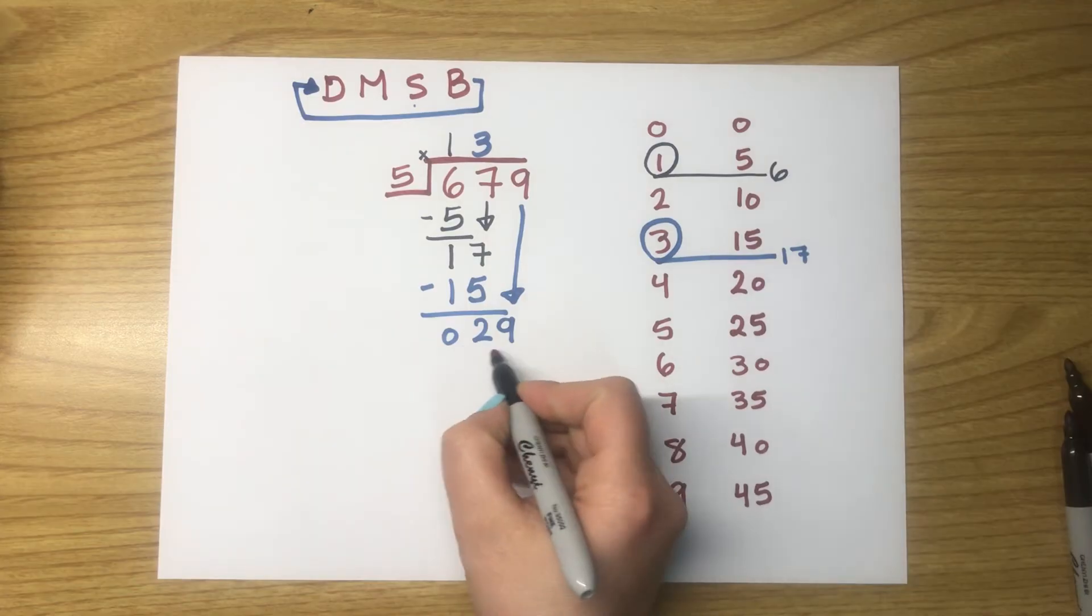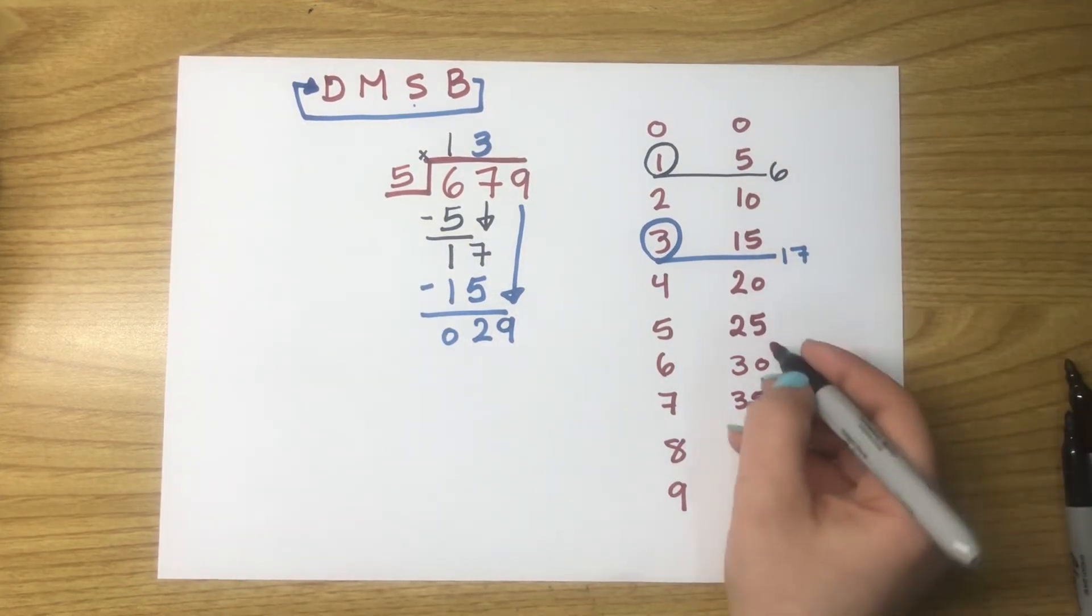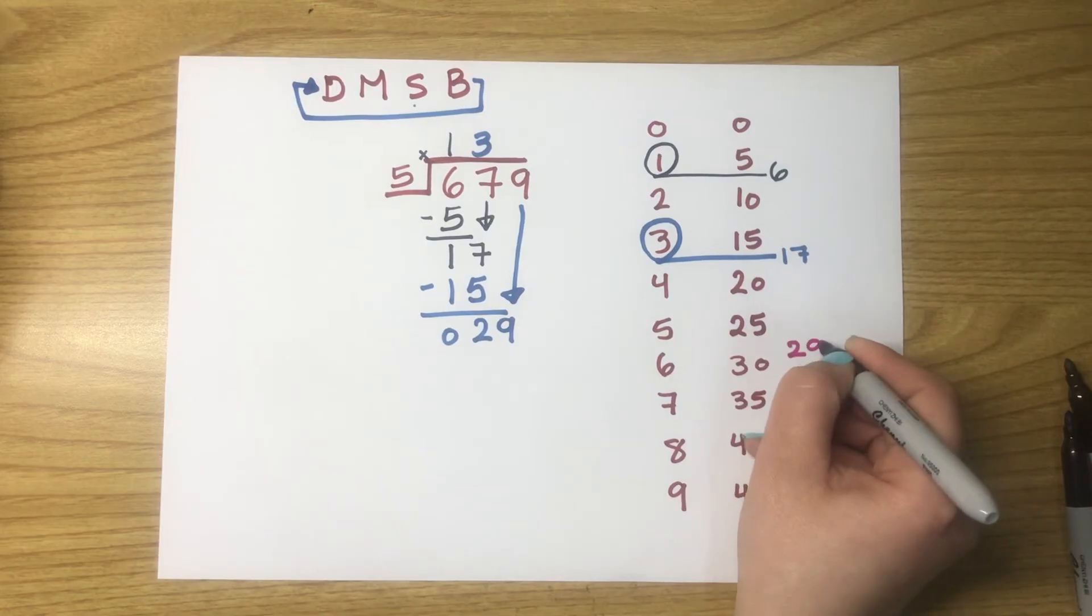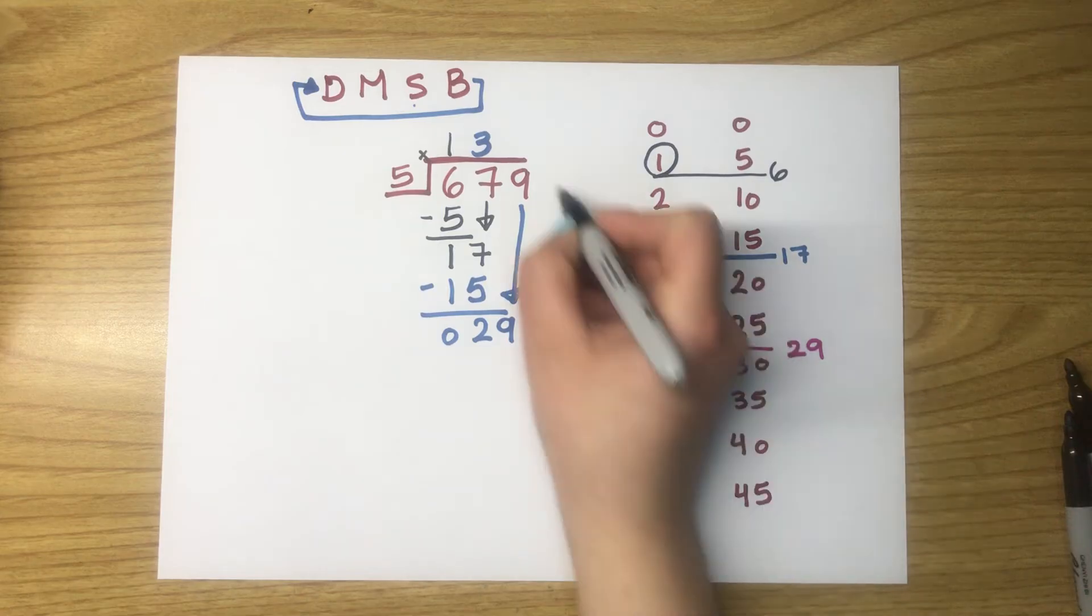Now, we have to divide 29 divided by 5. 29, where is it? It's here. String. Bubble. The 5 flies up.